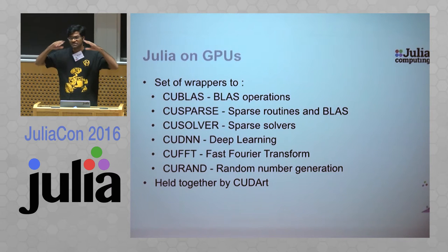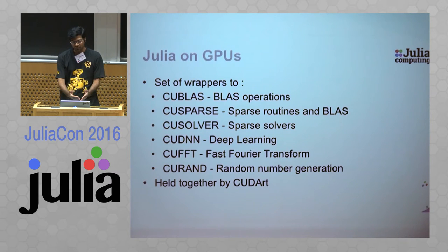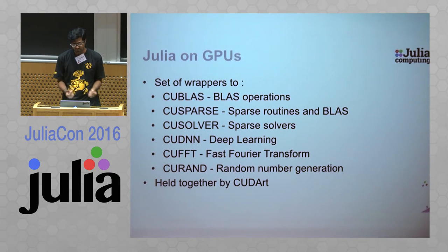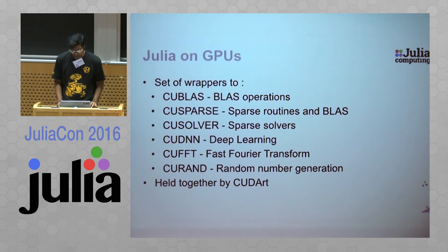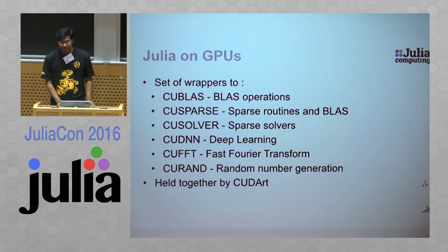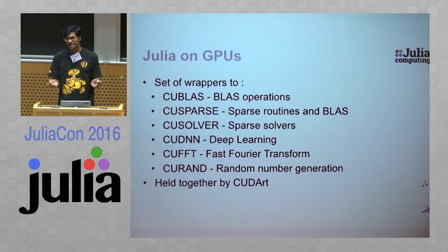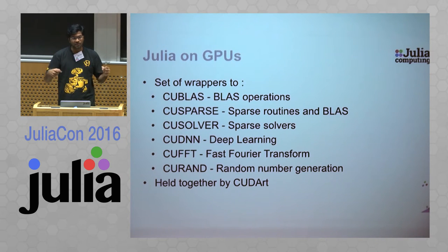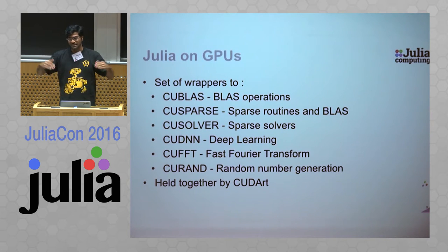In CUDArt, you'd have a Julia array, convert it to a CUDA array, and use all these different wrappers to perform BLAS operations, sparse routines, solvers, deep learning, FFTs, et cetera. But to do something as general purpose as adding two vectors together, you would still have to write a device kernel in CUDA code, compile it to PTX, and load it in CUDArt.jl.